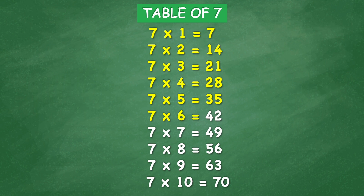7 times 6 equal 42, 7 times 7 equal 49, 7 times 8 equal 56, 7 times 9 equal 63, 7 times 10 equal 70.